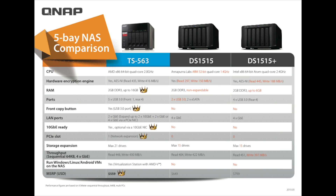Now let's look at the MSRP pricing for each of the units. The QNAP TS-563 lists at $559 US dollars. The DS-1515 is listed at $649, and the DS-1515+ is listed at $799 US dollars.